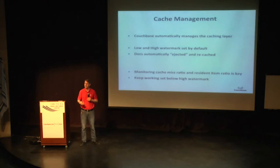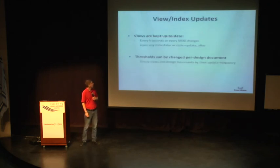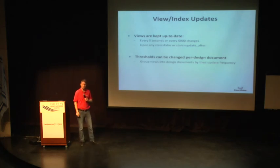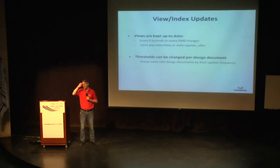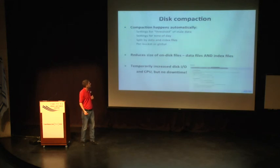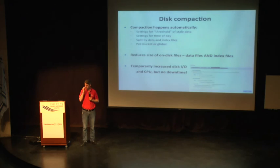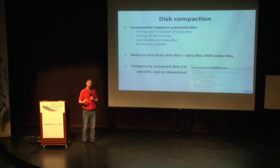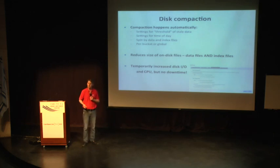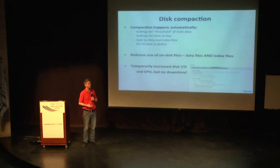Our view and index updates are automatically kept up to date. Every five seconds we check if there have been more than 5,000 changes to a particular data set, and then we process the view and index automatically. Those numbers can be changed based upon your application. Disk compaction is another classic challenge for databases — lots of other technologies force you to take the database down to do compaction. Couchbase doesn't; we manage this all automatically. A lot of help comes from our separation of the RAM caching layer versus the disk I/O layer, so not every request needs to be serviced by the disk. We're able to do compaction, take backups, and do index updates without impacting your performance or availability.